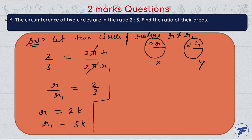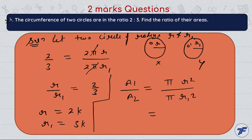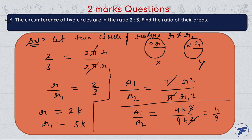Now we need to find the ratio of areas. Area of first circle is a1 and area of second circle is a2. So a1 upon a2 = πr² upon πr1². Putting the values: r = 2k so r² = 4k², and r1 = 3k so r1² = 9k². Therefore a1 upon a2 = 4:9.